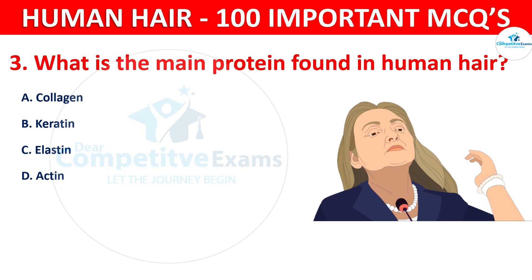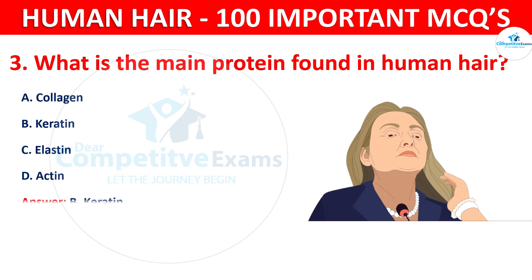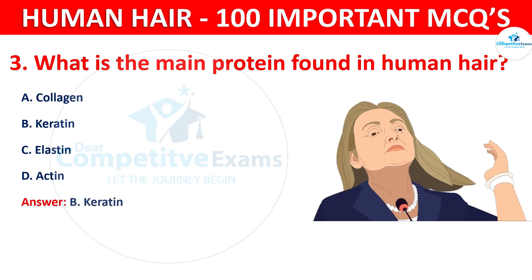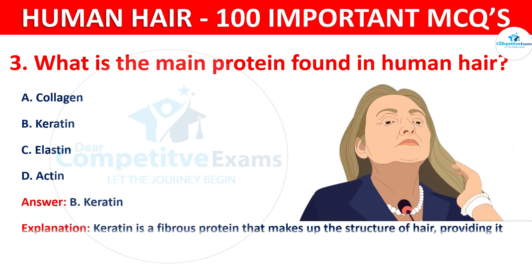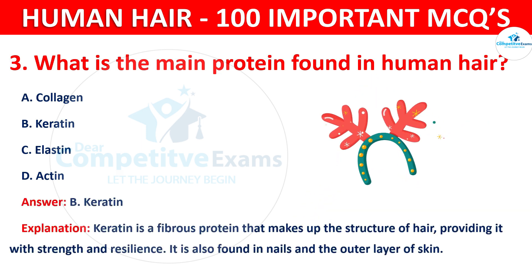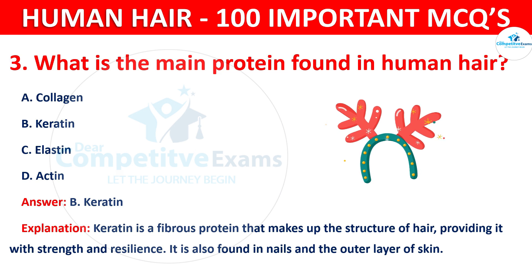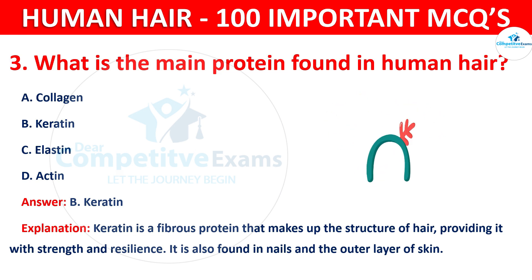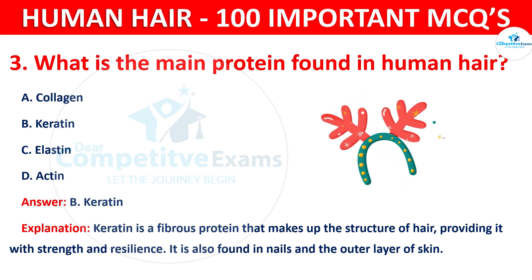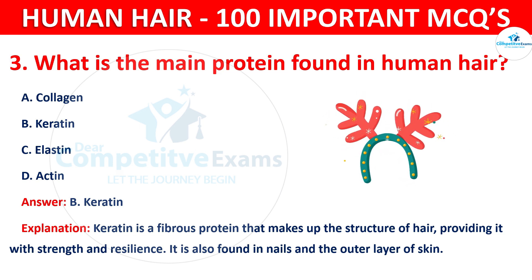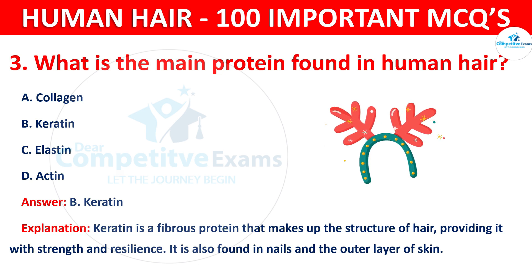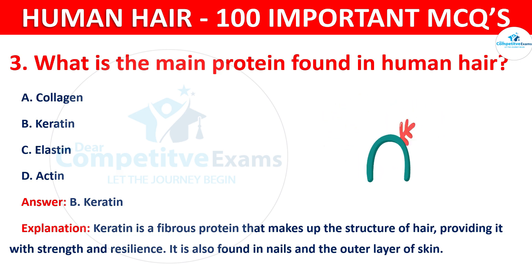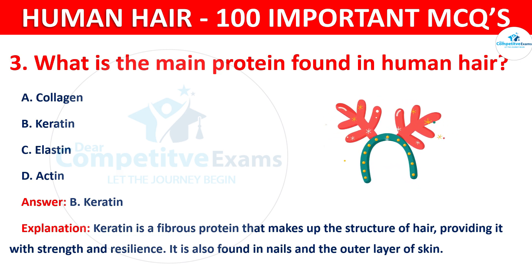The correct answer is B — keratin. Keratin is a fibrous protein that makes up the structure of hair, providing it with strength and resilience. It is also found in nails and the outer layer of skin.